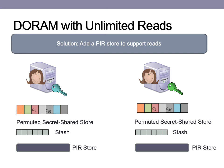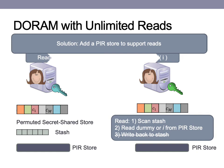Reads now first scan the stash, where the latest copy of the element would be if there was a previous write, and then read the element from the PIR store. They then take the element from the stash if it exists, or the one from the PIR store. Because PIR essentially supports an unlimited number of reads, we can support any number of reads between epochs, and refreshing only depends on the number of writes. However, we must be careful in selecting an individual PIR scheme to instantiate this version, as we wish to maintain our sublinear server computation and constant rounds in our new construction.